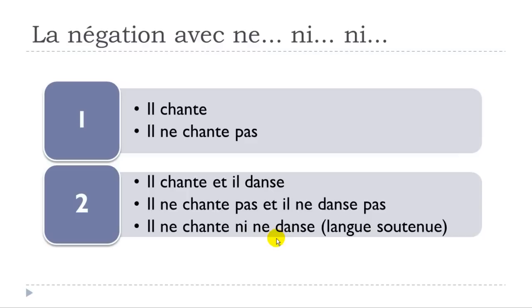Using NE NI NI with verbs would be: IL NE CHANTE NI NE DANSE — and keep in mind that you don't use PAS at all. But in most cases people will use IL NE CHANTE PAS ET IL NE DANSE PAS.